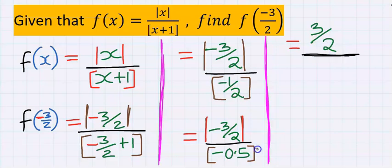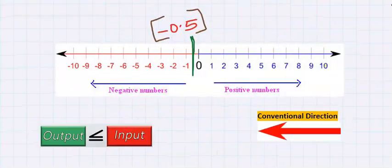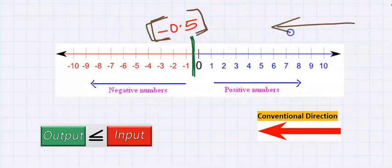At the denominator, we are going to look for the greatest integer function of minus 0.5. Minus 0.5 is in between 0 and minus 1, and greatest integer function conventionally goes towards the left only.